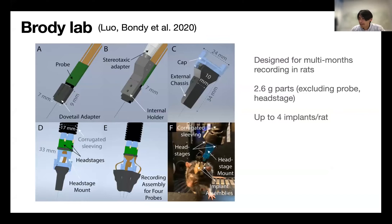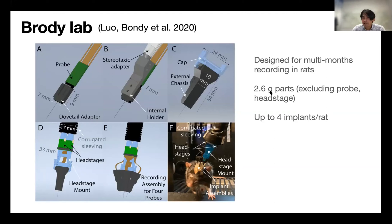Next is from the Brody lab. This system is very unique — it is designed for multi-month recording in rats. The system consists of a probe adapter, a base, and an external shaft, connected by screws and implanted to the animal. The 3D printed parts weigh around 2.66 grams, excluding probe and head stage. Remarkably, this system accommodates multi-probe recording — you can use up to four Neuropixels 1.0 probes.